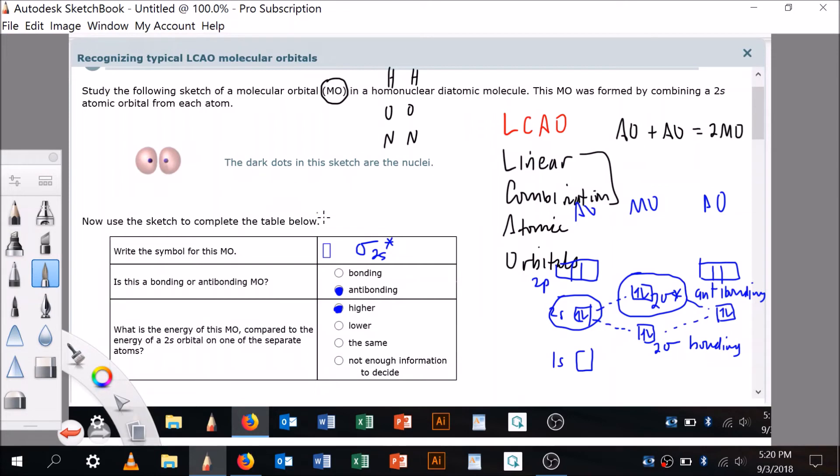So, we did a couple things here. Number one, we knew that since it came from combining two 2S's here, we saw that, so it must be a sigma. We thought about this, all right, 2S's are going to combine to make two sigmas. And so, we knew, and then we saw that mostly these electrons are on the outside of the nuclei, because the question says this black dot is the nucleus. So, the electrons are mostly on the outside, so therefore, it's antibonding. So, since it was antibonding, it would be sigma star, and since it's antibonding, it's going to be higher in energy. All right, hope that's helpful.